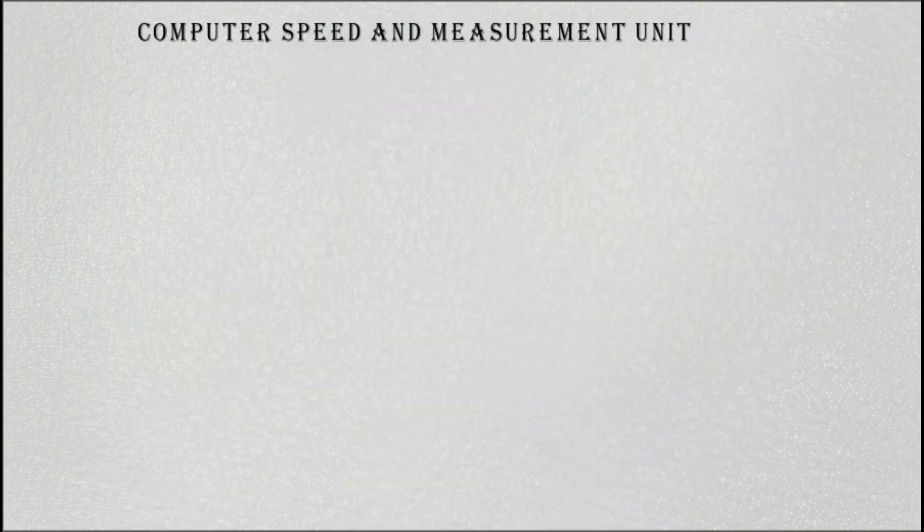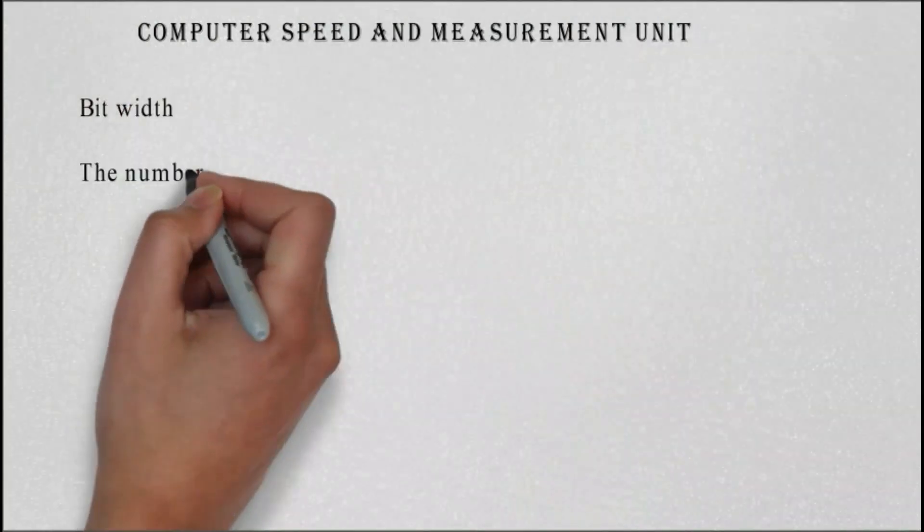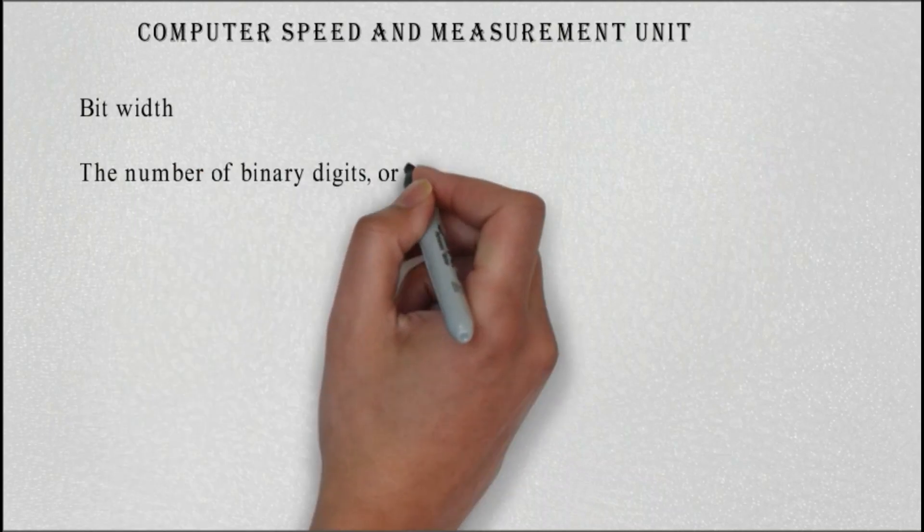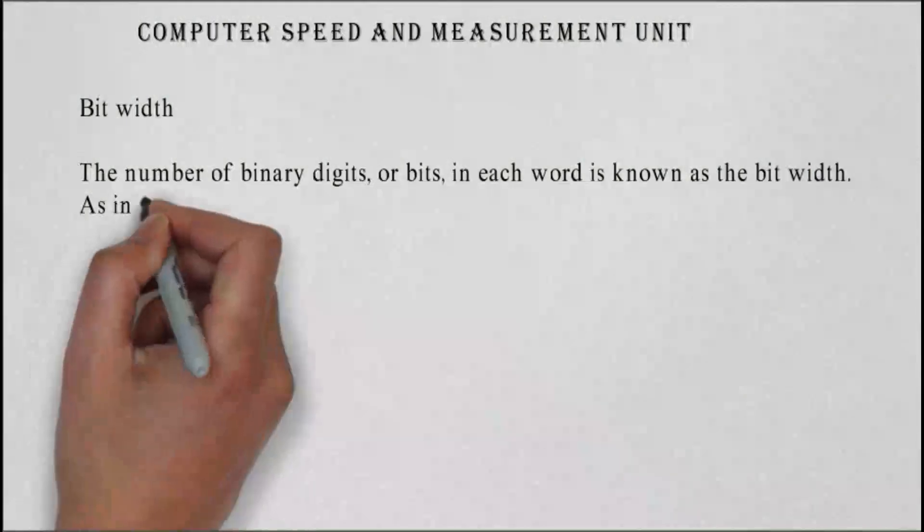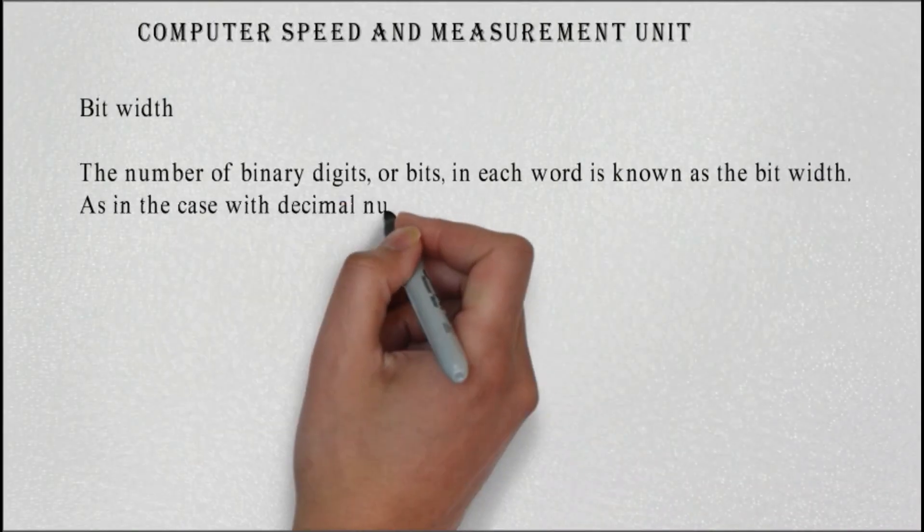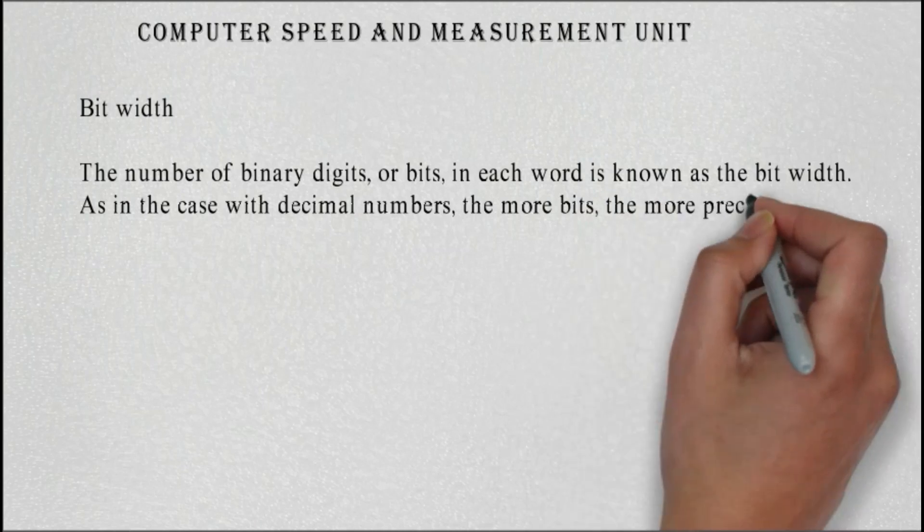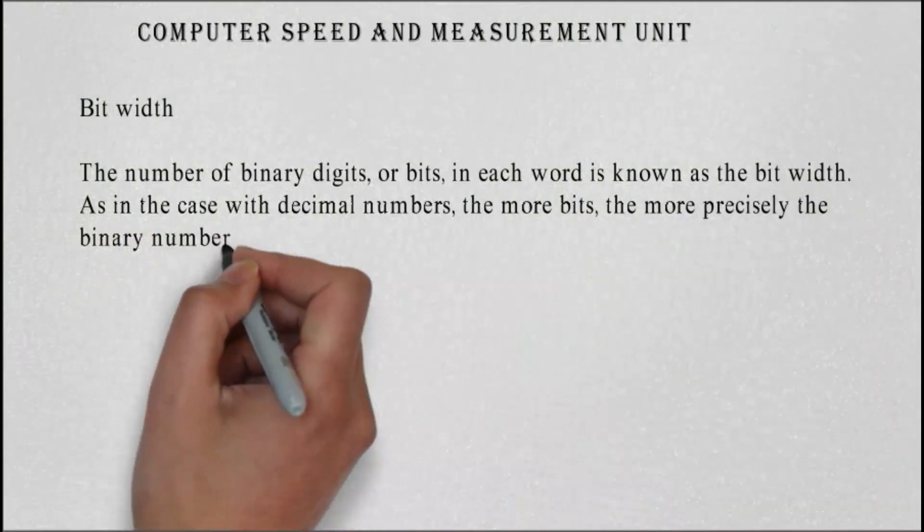Computer speed and measurement unit: bit width. The number of binary digits, or bits, in each word is known as the bit width. As in the case with decimal numbers, the more bits, the more precisely the binary numbers can represent the signal.